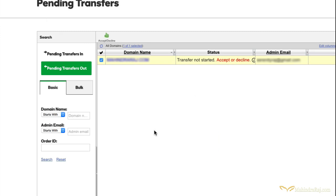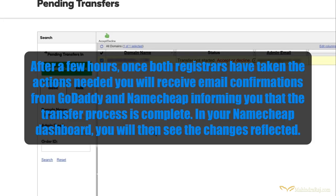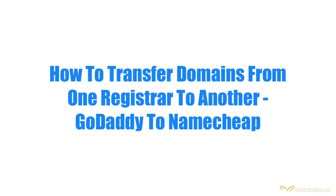Once you've accepted the transfer of all your domains, just give it some time — it'll take anything between a few hours to maybe even a day for the whole transfer to complete to the new domain registrar. So basically that's it. If you want to transfer domain registrars, just watch this video and follow it step by step. Bear in mind that between each step you may have to wait 5, 10, 15 minutes for verification to be done by both parties. Give it some time, check your email, click on the relevant links, and just take action.